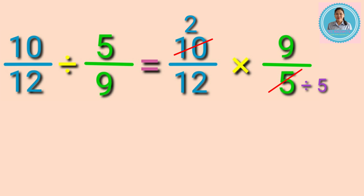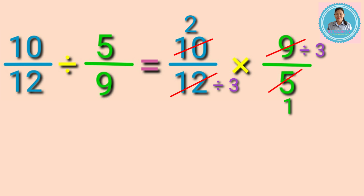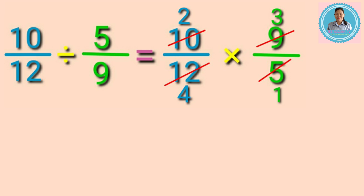Next, divide twelve and nine by their GCF, which is three. Twelve divided by three equals four, and nine divided by three equals three. Now let's multiply the new numerators and multiply also the new denominators.